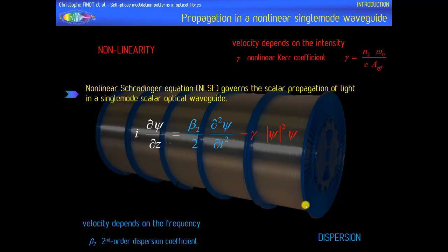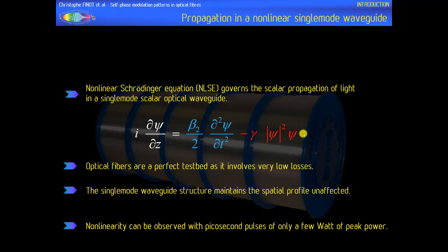In this talk I will only focus on what happens in single-mode optical fiber. In this case light propagates following the nonlinear Schrödinger equation, which takes into account the consequences of dispersion and Kerr nonlinearity. With optical fiber, as the light is guided, it is not affected by spatial effects. Moreover, optical fibers present a very low level of losses, and over a very long length self-phase modulation can be observed using only a few watts of peak power without needing femtosecond pulses.